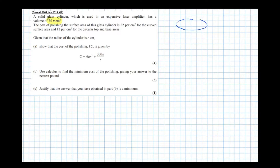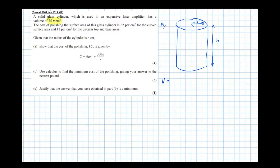Let's first draw the situation — a rough diagram of a cylinder with radius r and height h. We're told the cylinder has a volume of 75π cm³. Writing that mathematically: V = πr²h = 75π. This is part (a). We're asked to show that the cost of polishing C pounds equals the given formula, with radius r centimetres.